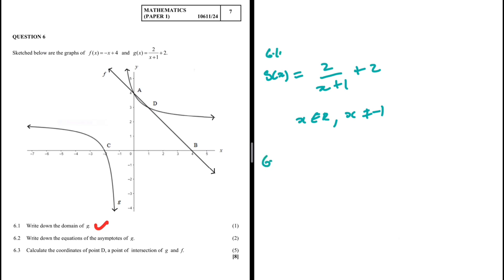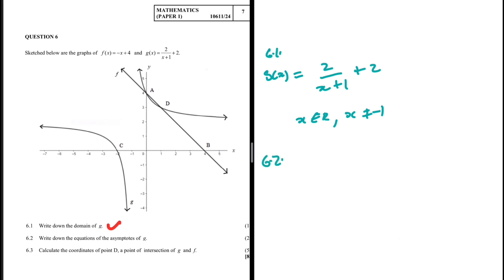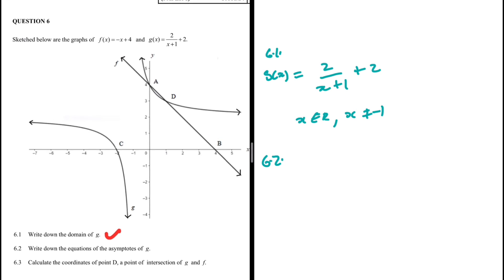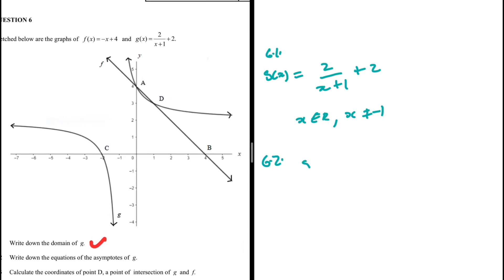Now for 6.2: write down the equations of the asymptotes of g. We still have g(x) = 2/(x + 1) + 2. From 6.1, the value of x for which the function gets very close to but never touches is our asymptote. So x = -1 is an asymptote.